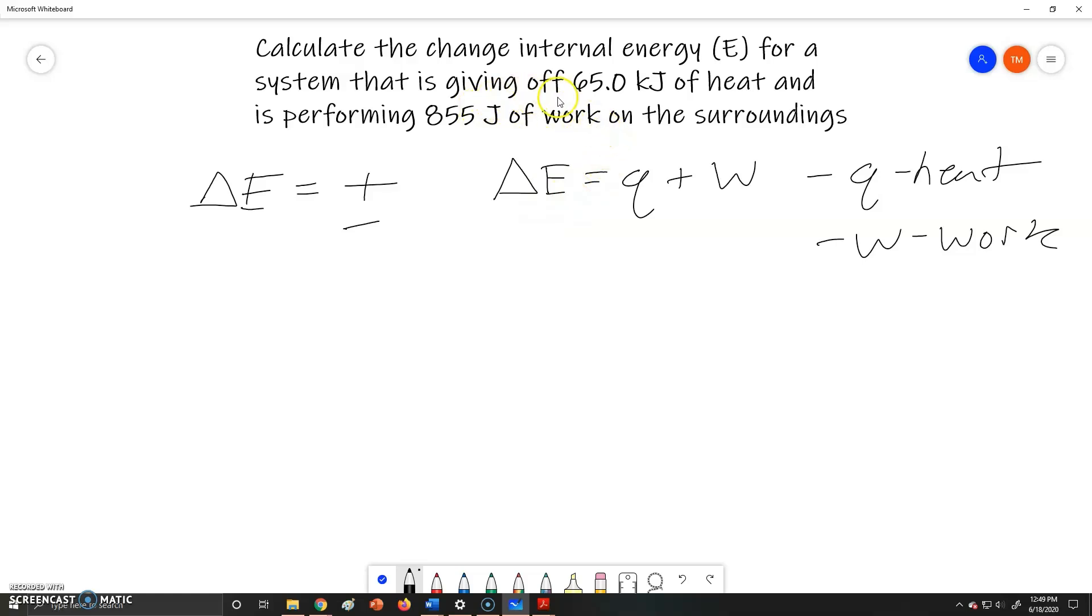Here we're told that the system is giving off 65 kilojoules of heat, which means that the system is releasing that energy. So Q is going to be negative, Q is going to be negative 65.0 kilojoules.